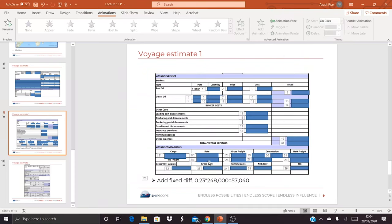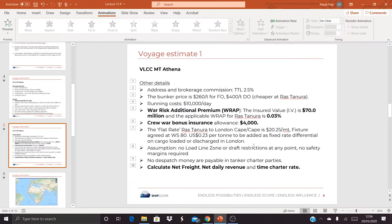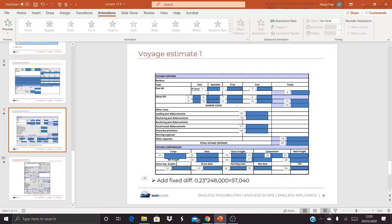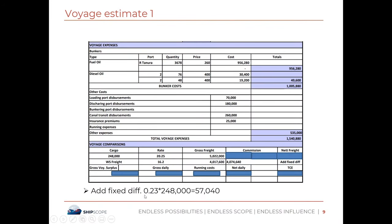Also, the question mentions a fixed rate differential of $0.23 per metric ton. We need to add this, so 0.23 multiplied by 248,000 equals $57,040. Adding this to the WS-based freight gives a gross freight of $4,074,640.